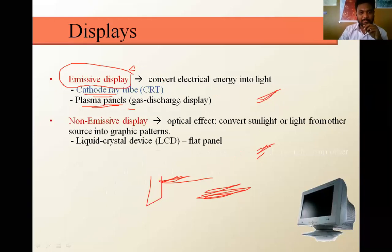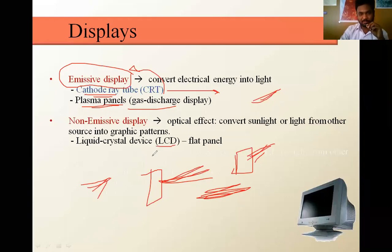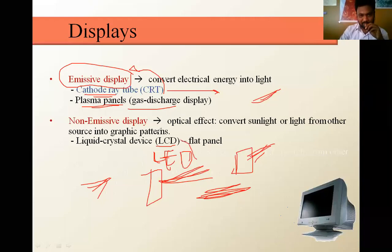In the non-emissive display, we are not going to generate or produce any beams. Examples for those types of displays are LCD displays and LED displays. LED stands for Light Emitting Diode. These are the two types of monitors that we are currently using.